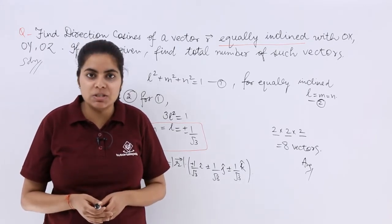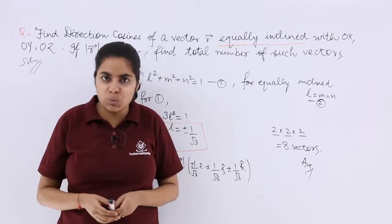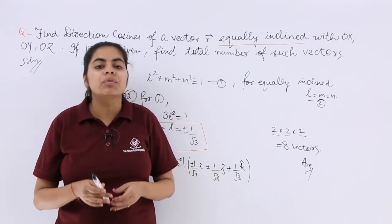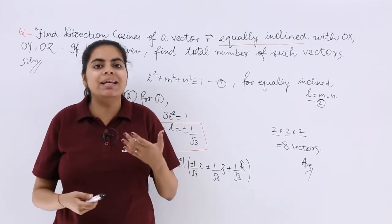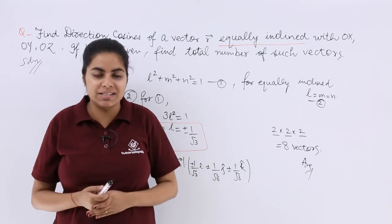Usually in examinations and in your NCERT books, we see a question: find the direction cosines of a vector which is equally inclined to the axis - 3 axes: x axis, y axis, z axis.